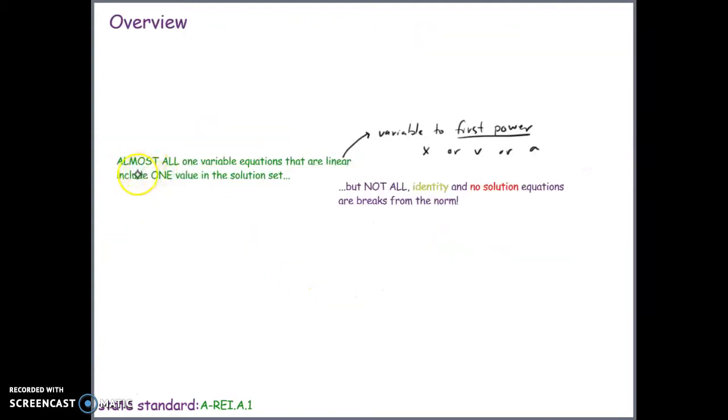A quick overview. Almost all one-variable equations that are linear include one value in the solution set, but not all. Identity and no-solution equations are breaks from the norm. So every equation we've seen to this point has had only one correct answer. Today we're going to learn about the two types of linear equations, the identity and the no-solution equations, that have something different for their answers.